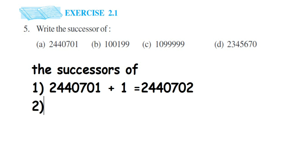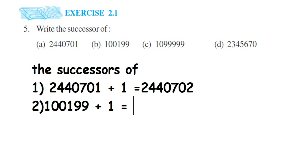The next question: we have 1001199. To find the successor, we add one to it. Now when adding one here, we have a nine, so there will be a carry. We have 199 — adding one makes it 200, because nine becomes ten, generating a carry. That carry passes to the next nine, generating another carry. So the whole number becomes 1001200.